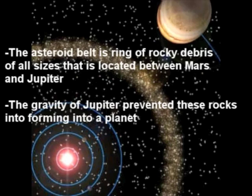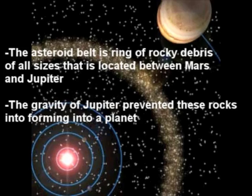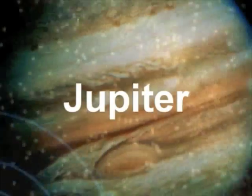The asteroid belt is a ring of rocky debris of all sizes that is located between Mars and Jupiter. These rocky debris, or asteroids, are composed of varying material, with some made of silicon material to metals. The gravity of Jupiter is said to have prevented the asteroids from gathering into a hypothetical planet.